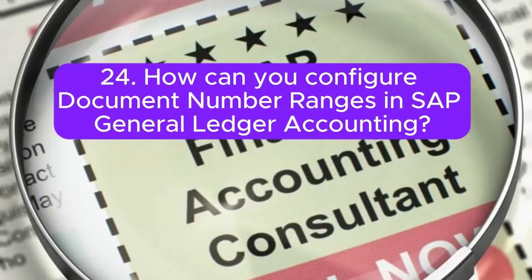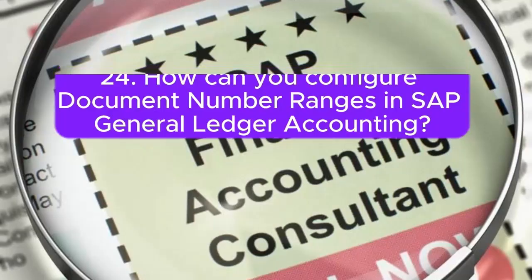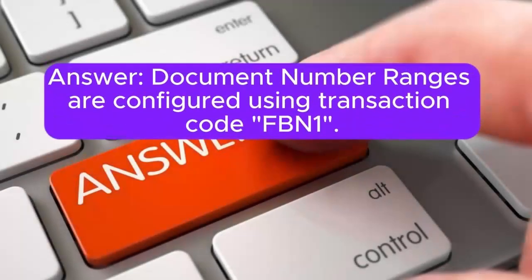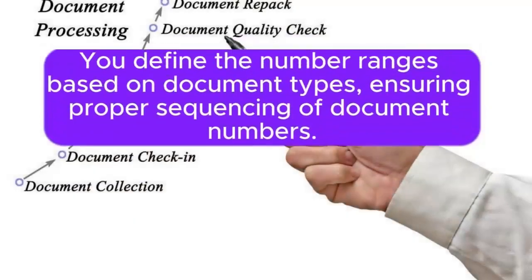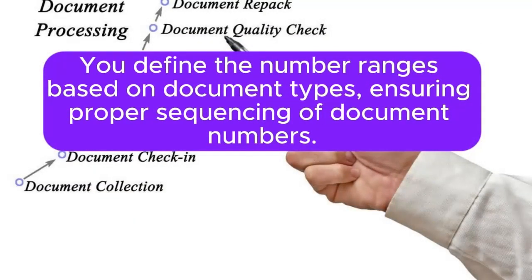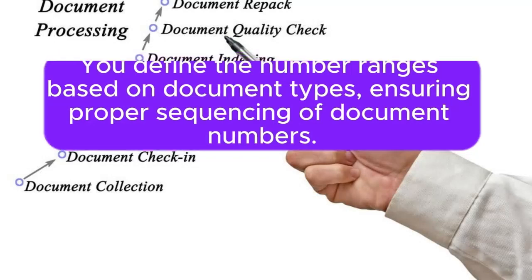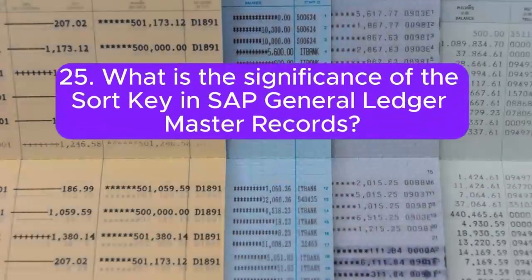Question 24: How can you configure document number ranges in SAP General Ledger accounting? Answer: Document number ranges are configured using transaction code OBN1. You define the number ranges based on document types, ensuring proper sequencing of document numbers.